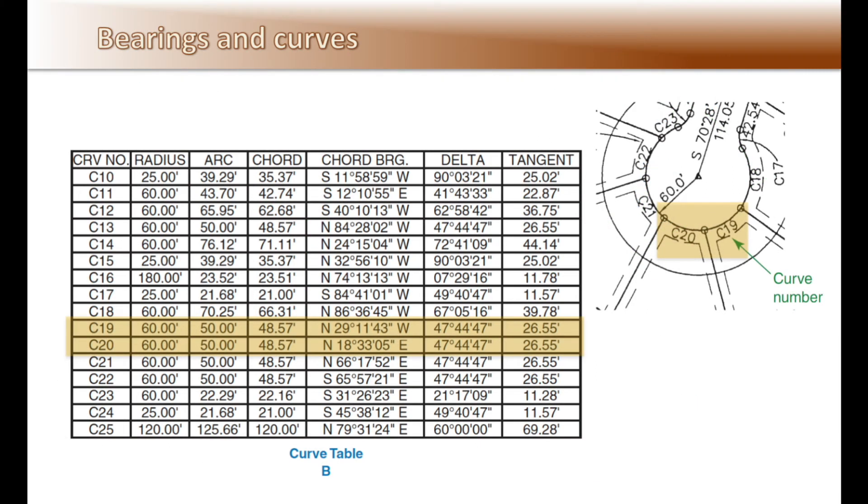Curves are indicated by a curve number so it can be located on the plan. They are defined using a radius, an arc length, a chord length, a chord bearing, a delta, which is the angle in degrees, and a tangent length. This makes it so the surveyor can use multiple ways to find points in the field if needed.